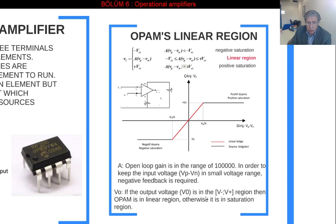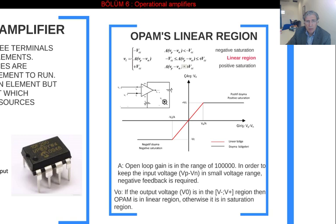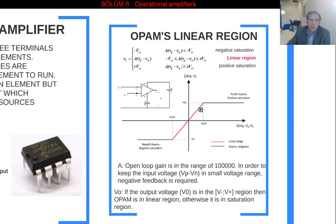If the output voltage V0 is between -Vcc and +Vcc, the op-amp is in the linear region; otherwise it is in saturation. So another way of checking whether we are in the linear region: if V0 is between -Vcc and +Vcc, we are in the linear region. Normally, we are not going to study in the saturation intervals but in the linear region.